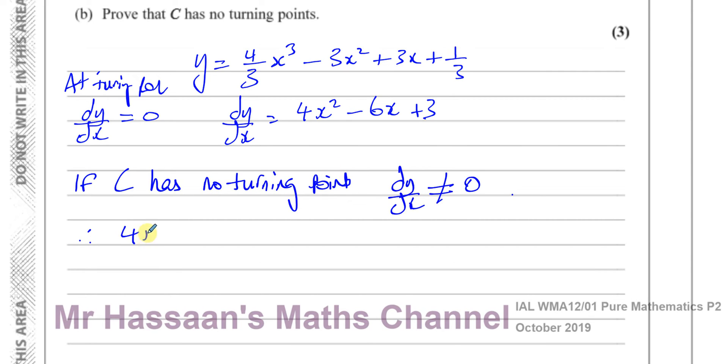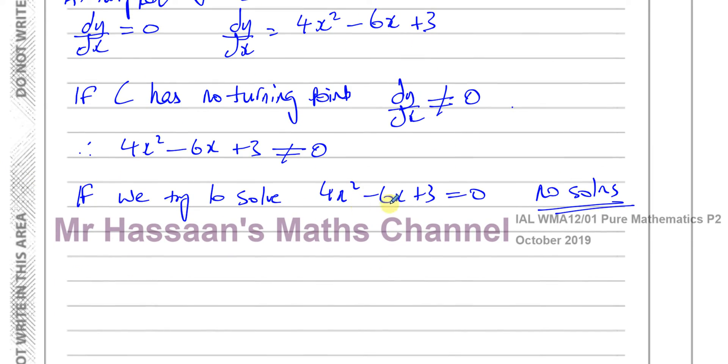So we can say, if C has no turning points, then dy/dx will never equal 0. It will never reach 0. Therefore, 4X squared minus 6X plus 3 cannot equal 0. So that means that if we try to solve 4X squared minus 6X plus 3 equals 0, there should be no solutions. So what will help us to know if this will have no solutions? Well, it looks like it's a quadratic. If we try to use the discriminant here, B squared minus 4AC should be negative. If B squared minus 4AC is negative, this will never equal 0.